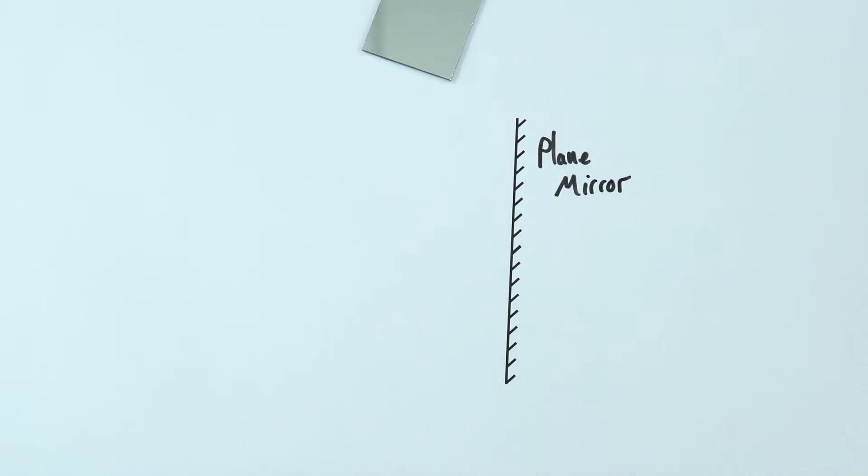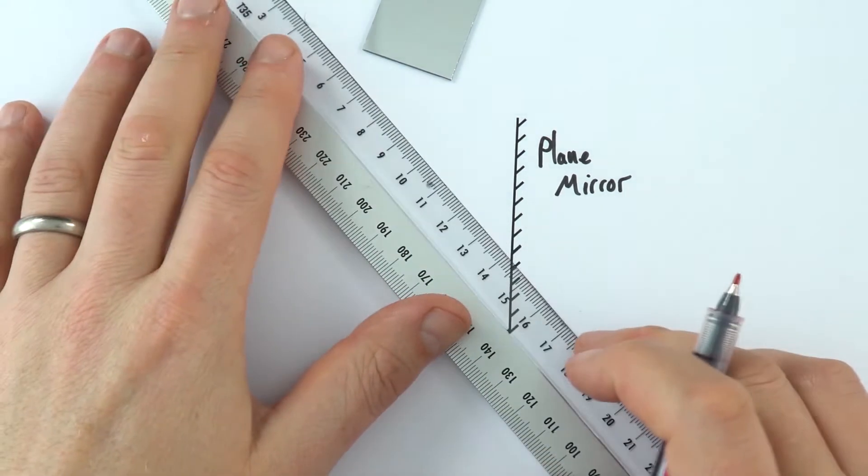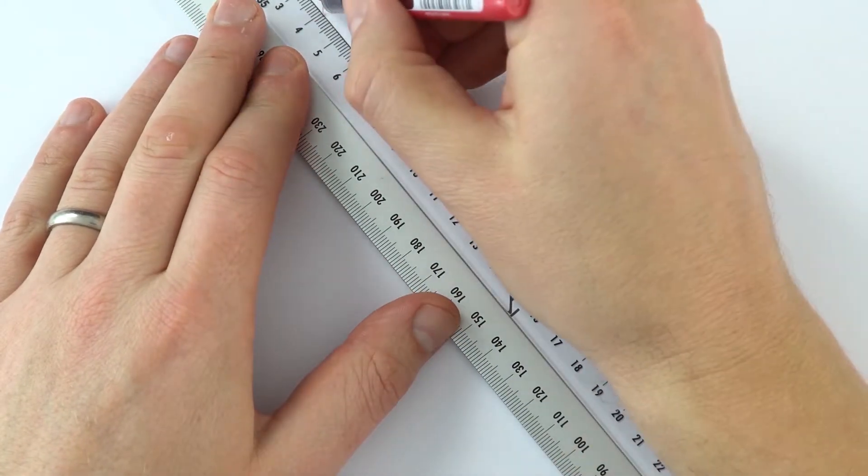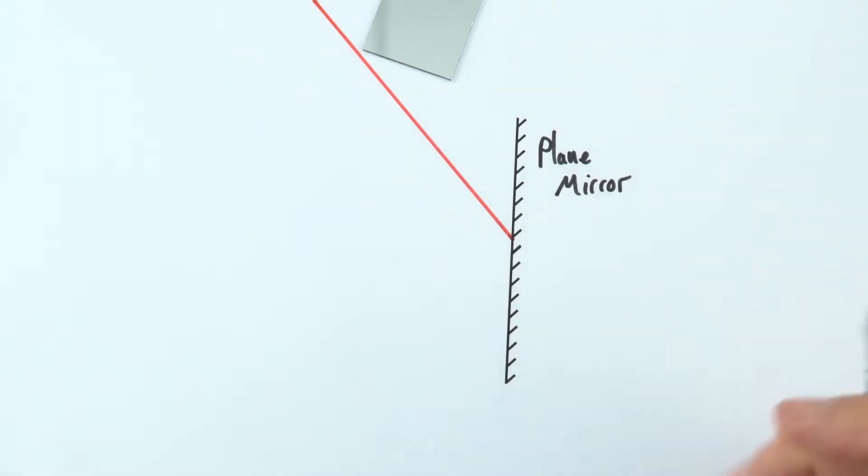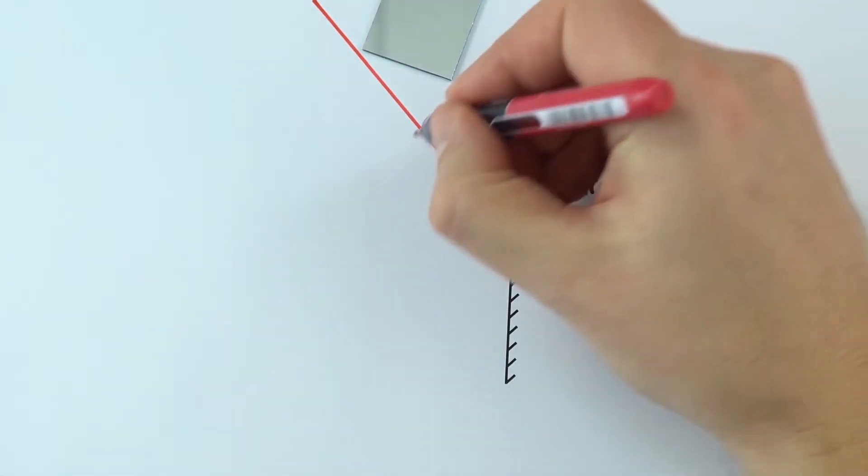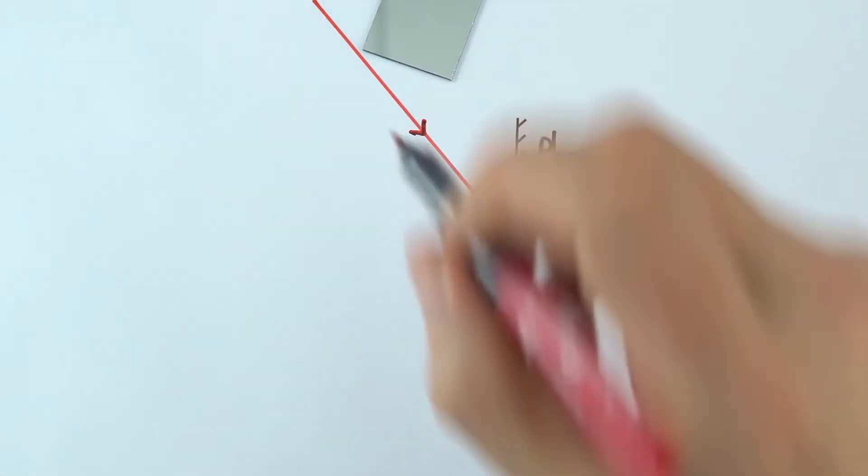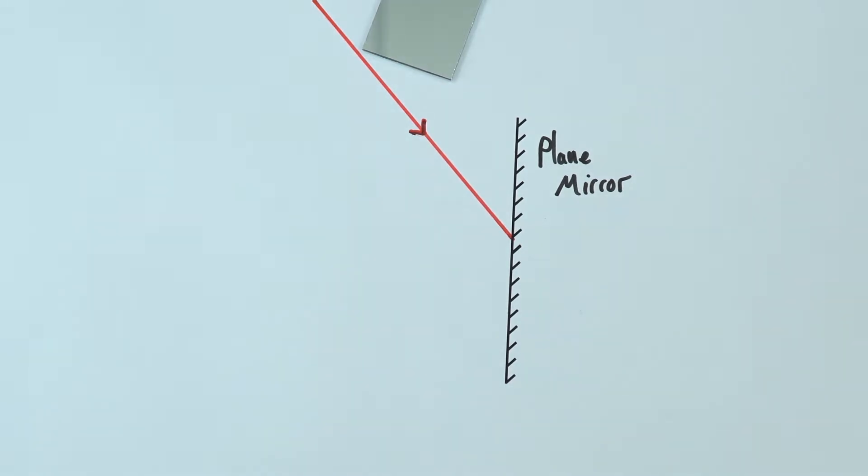Now if you have a ray of light, we can look at that ray of light hitting the mirror, so it comes in and hits the mirror at that point. I'm going to put an arrow to show the direction of that ray of light, and then I'm going to draw a line at 90 degrees to the surface of this plain mirror.